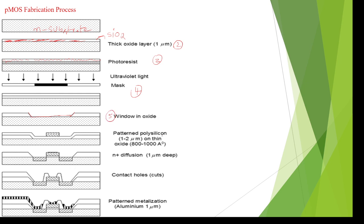In the sixth step, to design the gate terminal, we deposit polysilicon material in the middle of the substrate. Polysilicon material is used to design the gate terminal. The color for polysilicon is red. Gate terminal is completed in the sixth step.